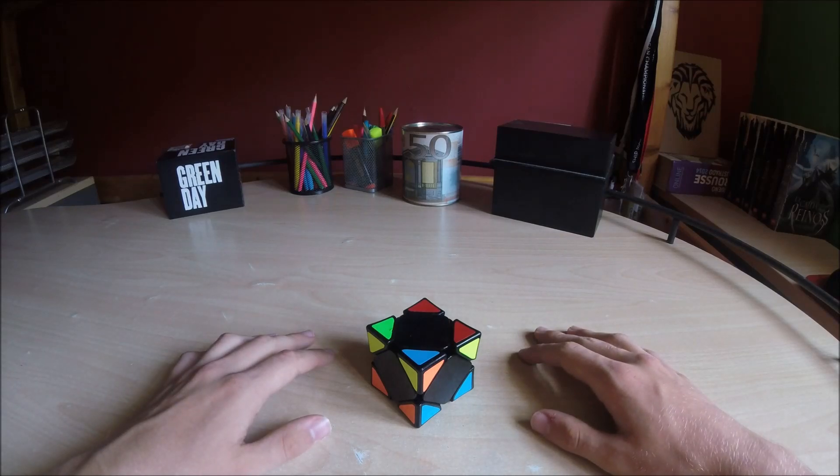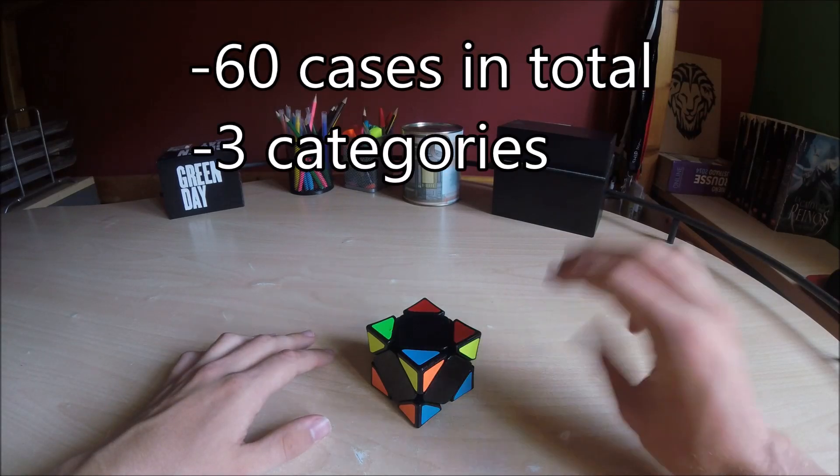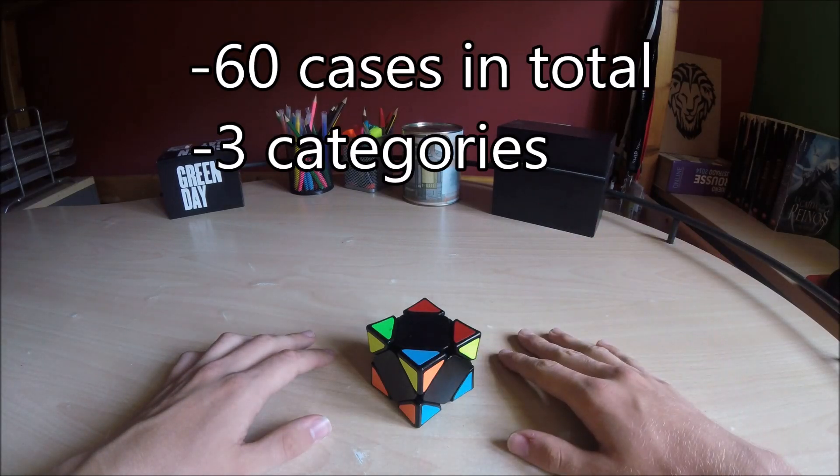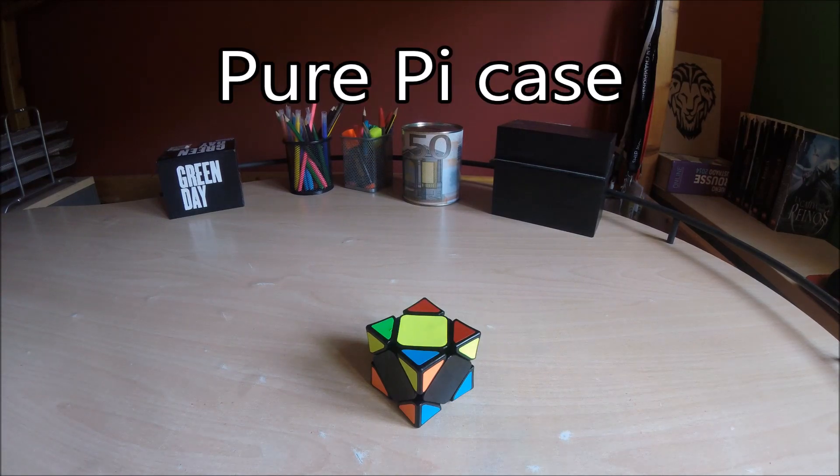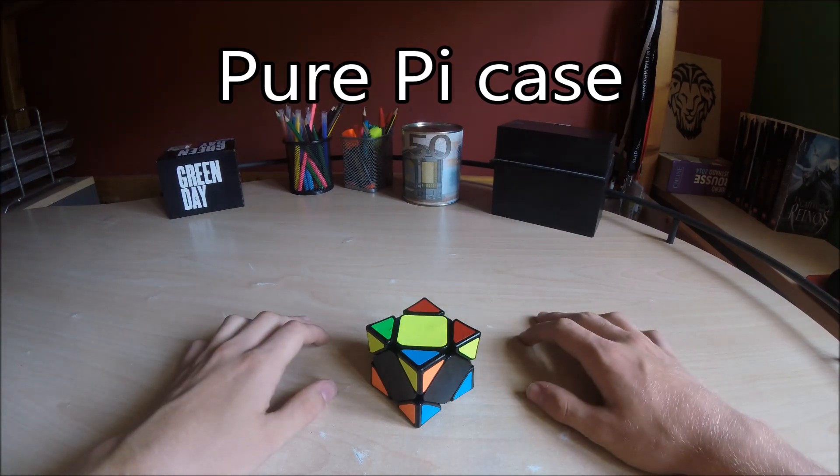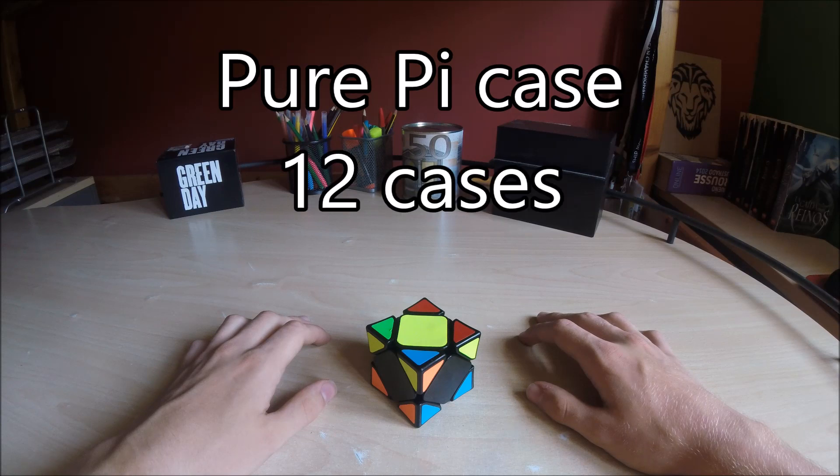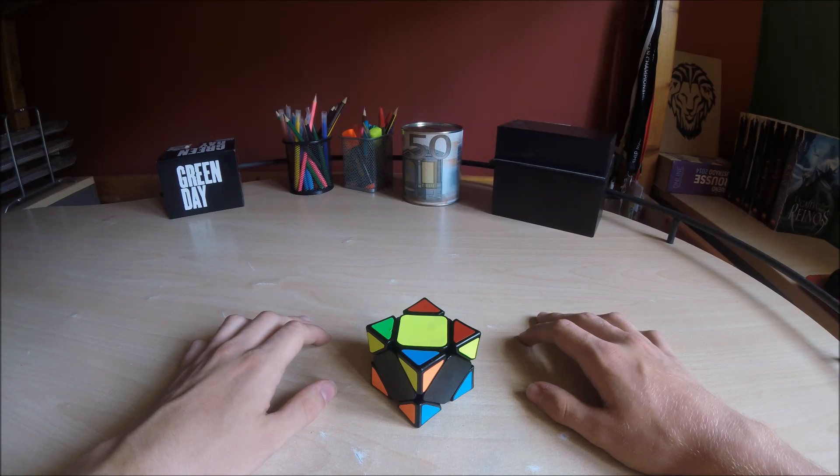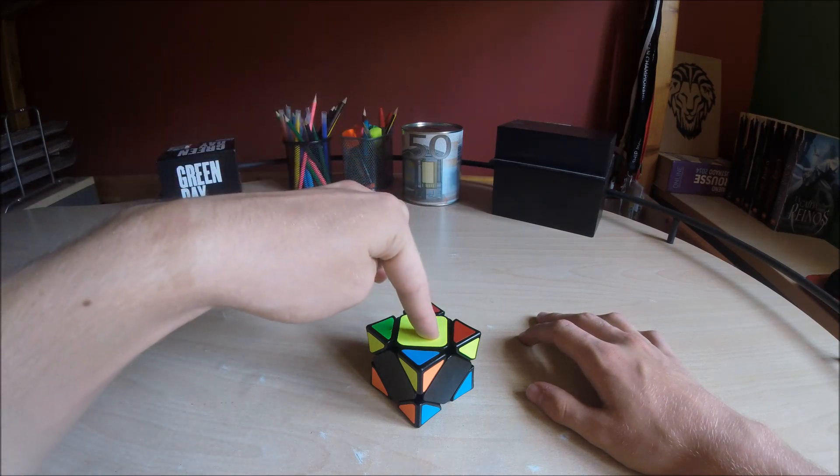We start with the Pi case. There are 60 cases in total and 3 categories that we will see now. The first one is the pure Pi case. There are 12 cases and we recognize all of these cases by the adjacent center on the top.